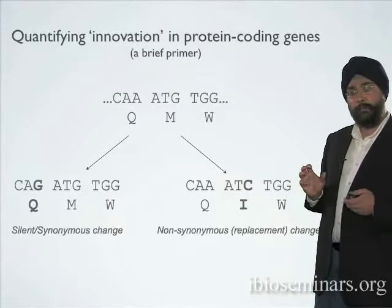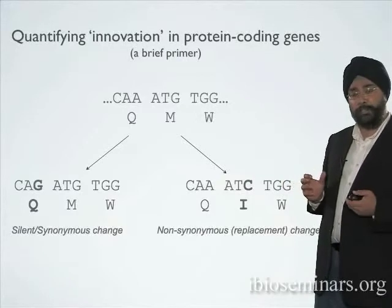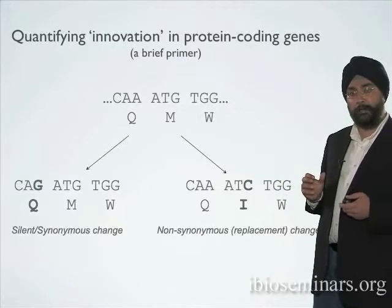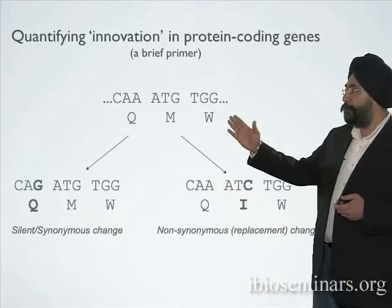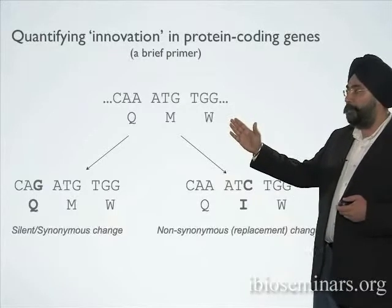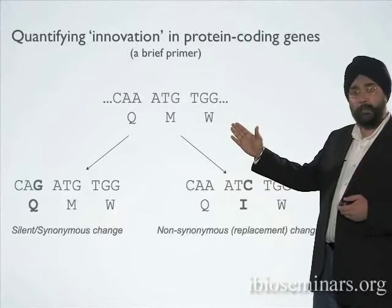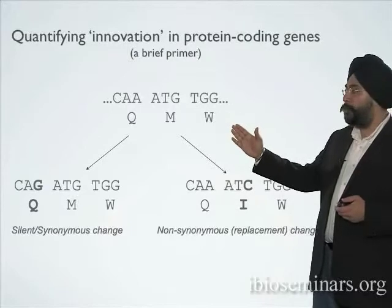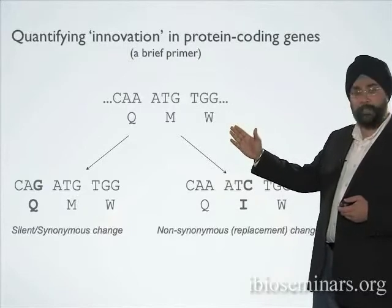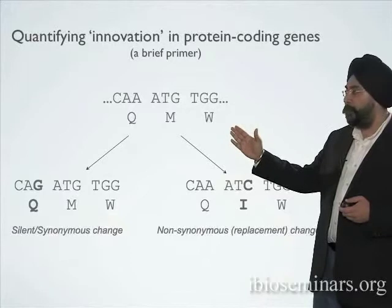And so, if you consider what a protein-coding gene arbitrarily looks like, it's this sort of sequence that I've indicated here, where we've got three triplets — three codons — that specify three amino acids that will be incorporated into the protein produced from this gene.